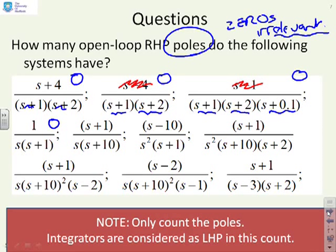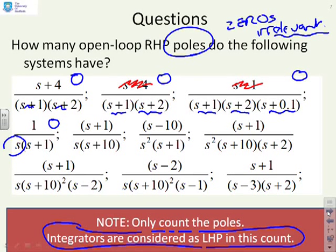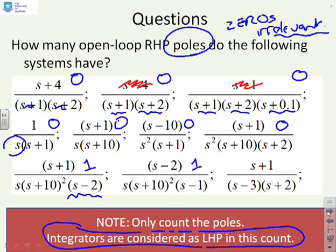This example has answer 0. Note there's an integrator here, but integrators are considered as left-half-plane in this count, so you can ignore those. The next few examples also give 0. Right-half-plane poles in the open loop are quite rare. However, we now come to examples where there is one: this one has one right-half-plane pole, this one has one right-half-plane pole, and this last one also has one right-half-plane pole.